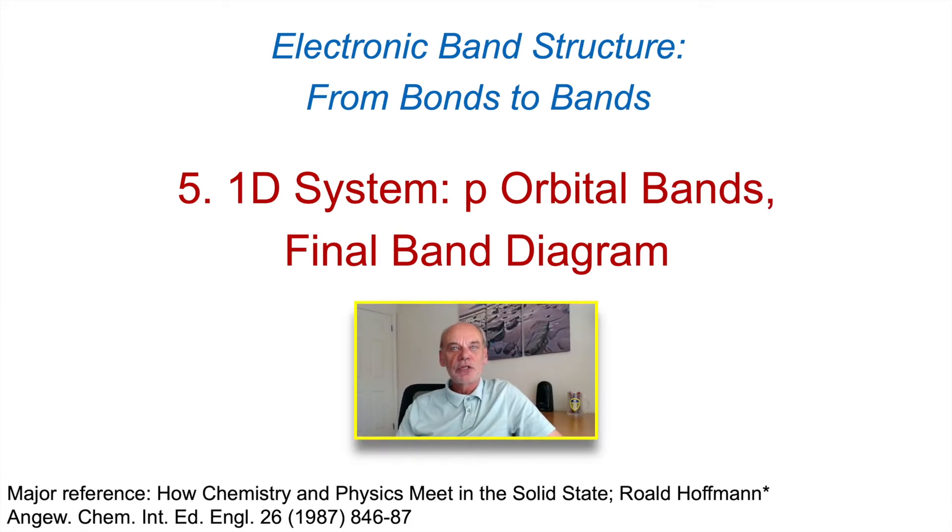Now we'll return to our one-dimensional atom system. We've dealt with s orbitals and how they form the bands, but that's too easy. Let's get to the p orbitals, where some interesting things happen. Because now, if you have a node, then the p orbital sigma bonding is no longer anti-bonding, but it's bonding. So in this video we'll talk about that, and we'll finish off by looking at the entire band diagram for the one-dimensional system, including all of the orbitals.